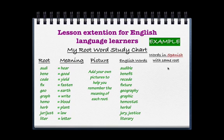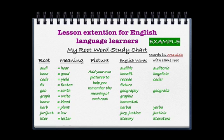I've come up with some examples to help you see the similarities. We have 'audible' in English and 'auditorio' in Spanish — it doesn't mean the same, but you can see the root is the same, meaning 'to hear.' 'Benefit' and 'beneficio' share the same root. 'Receive' — 'ceder' is a verb in Spanish meaning 'to yield,' and 'seed' means 'to yield.' 'Geography' in English is 'geografía' in Spanish — same root 'geo,' meaning 'earth.' The idea is to understand that these roots are the same even across different languages.